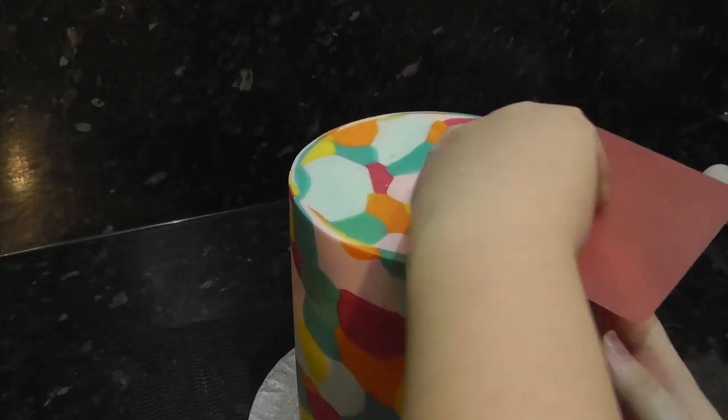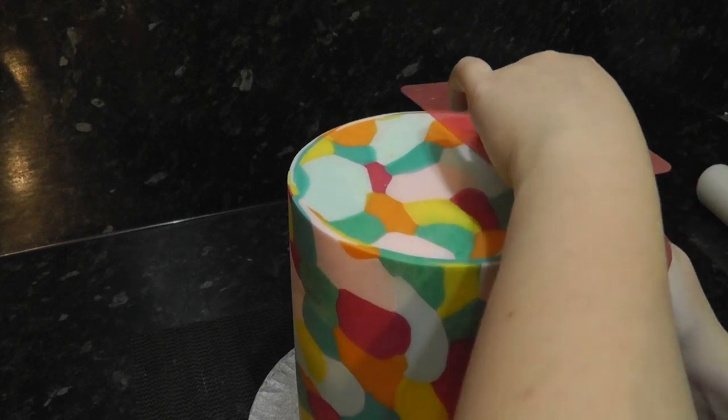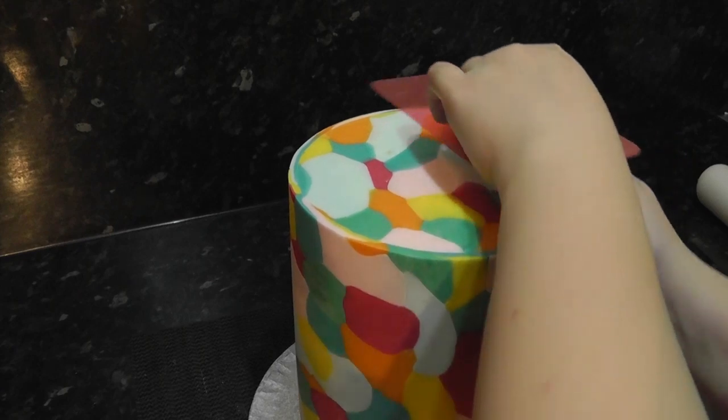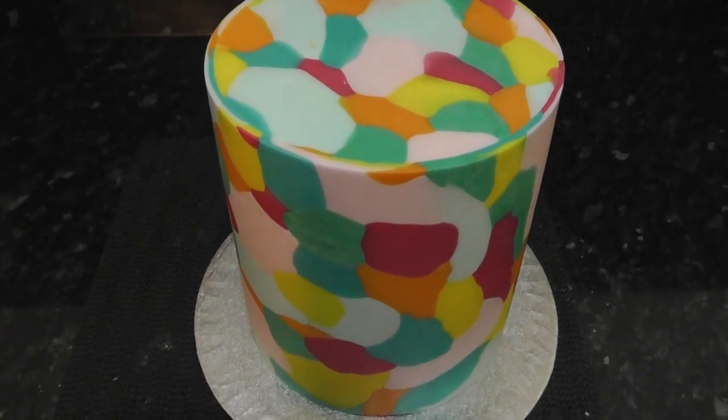Give it a quick sweep over the top edge to neaten it up. I have a full tutorial on sharp edges which I'll leave linked below. You should be left with a cool colorful tier.